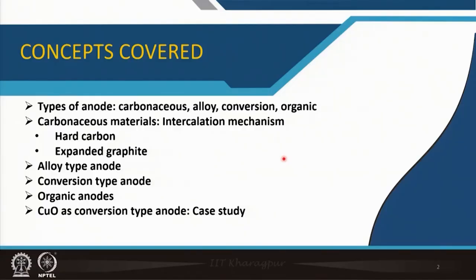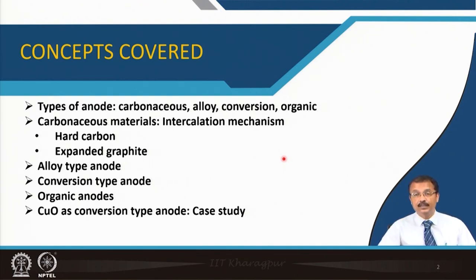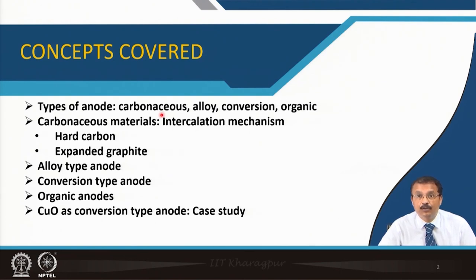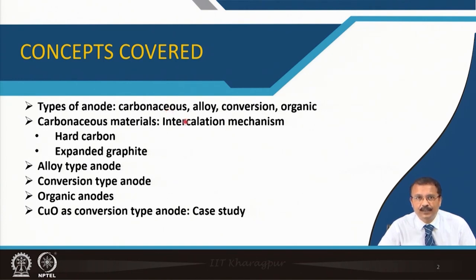If you look at the type of anodes, you will find very much similarity with lithium ion batteries. Here also we will be talking about carbonaceous material, but not the same type of anode like graphite — it has certain problems. Graphite cannot be used as anode for sodium ion battery. Certain alloys, conversion types of material, and organic material are the anodes for sodium ion battery.